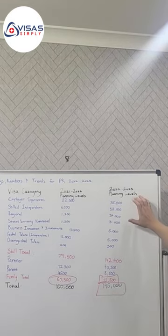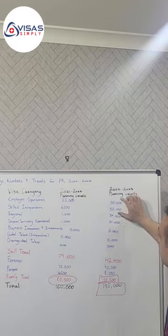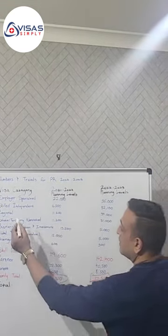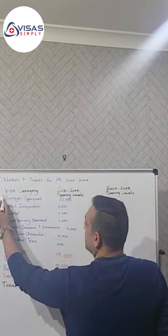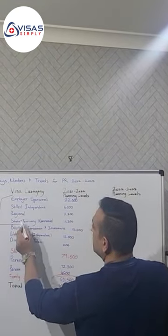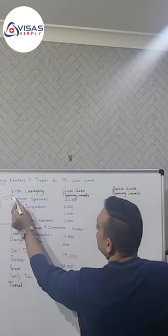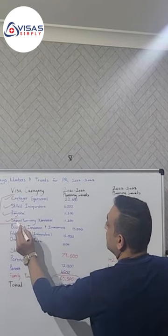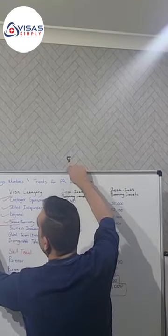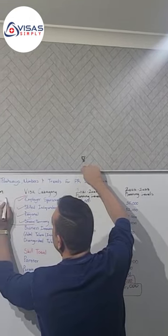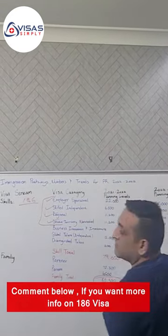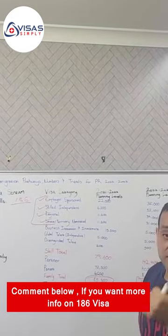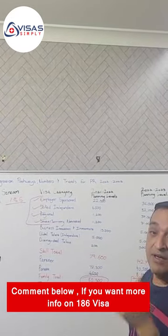Whoever is going to get permanent residency this year, they're going to get it either through skills. If you really look at it, the skill visas include employer sponsored, skill independent, regional, and state territory. When we say employer sponsored, we're talking about 186, generally speaking three years of work experience, skill assessment, competent English, employer occupation on medium to long term list.